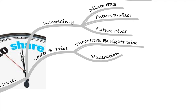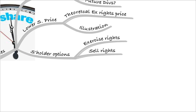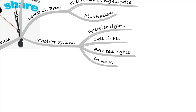The shareholder's options under a rights issue are: they can exercise the rights, sell the rights, sell part of the rights, or do nothing. Usually if they do nothing, the company will sell the rights for them and give them the money.